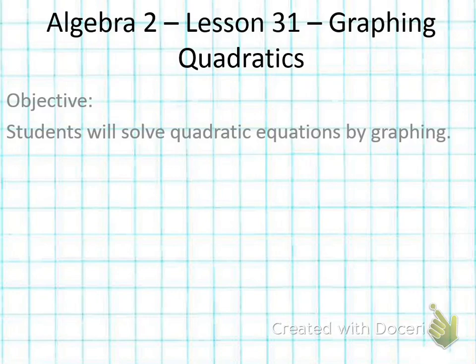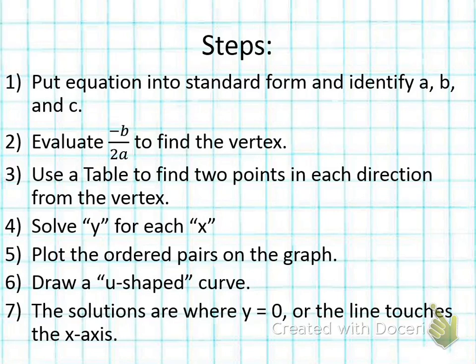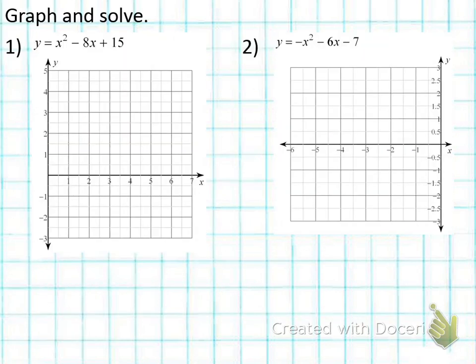Here are the steps for today — these are the steps from a couple weeks ago. Lots of steps to graph. So for number one, the first thing I'm looking at is: I want to make sure a, b, and c are in order. So a is one, b is negative eight, c is fifteen.